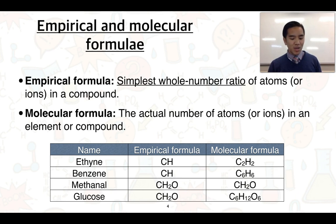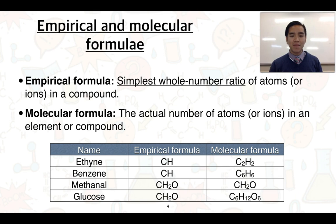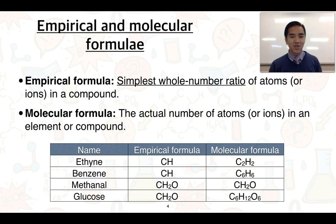We've got a table here that shows some differences between these two terms. We've got four different substances, and in each group of two, we can see that they appear to have the same empirical formula. So ethylene and benzene have the same empirical formula — they have the same ratio of carbon to hydrogen atoms. But their molecular formulae show exactly how many atoms make up each molecule: ethylene is C2H2 and benzene is C6H6, which gives the same ratio for the empirical formula.